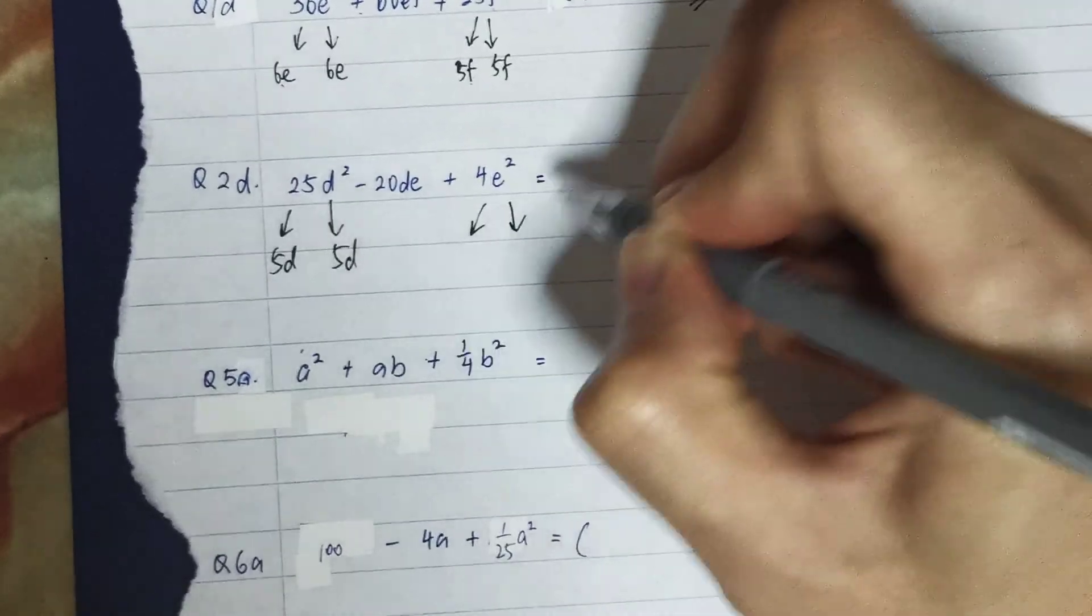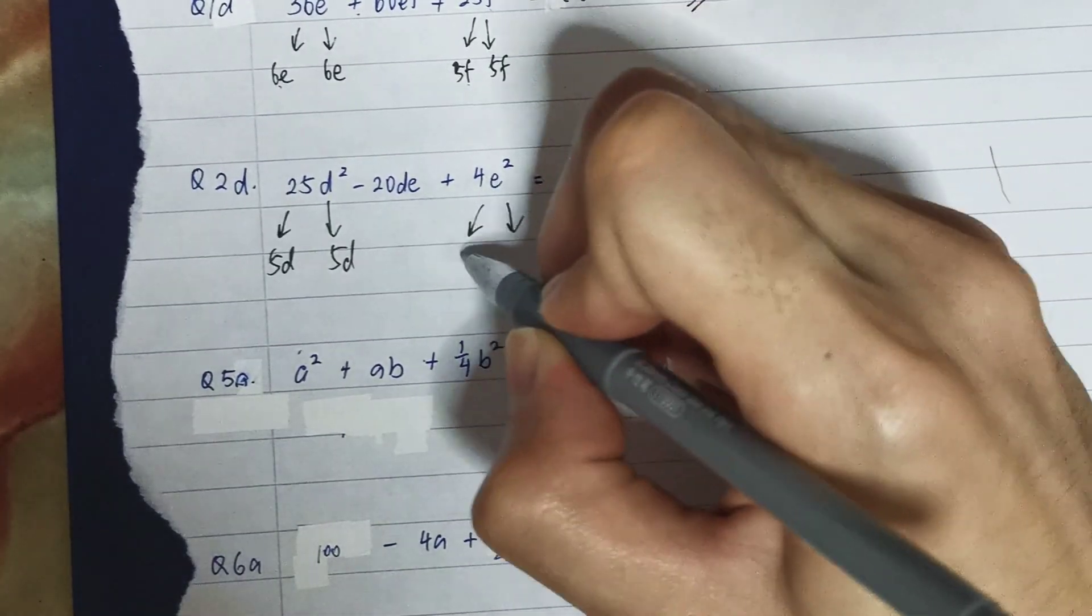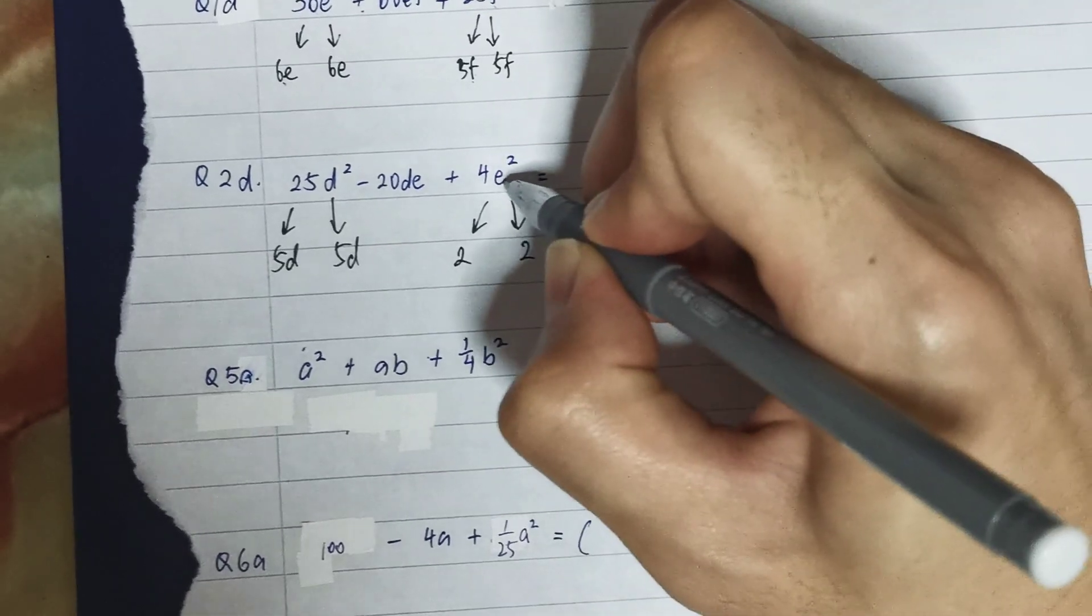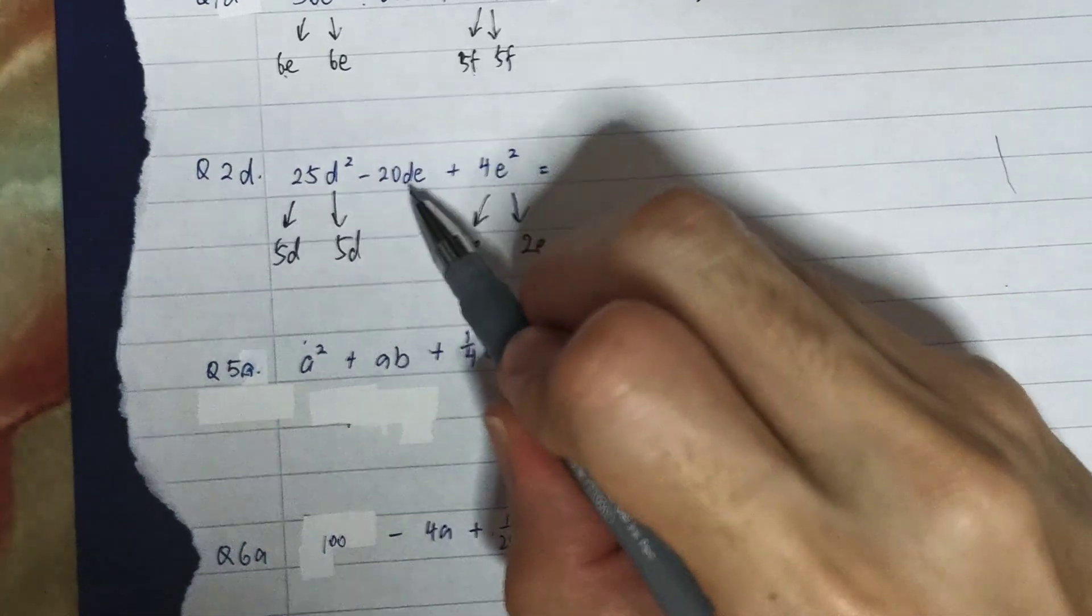Looks promising. 4e² - I know 4 is a square number because it's 2 times 2, and e² is 2e times 2e. The only thing that I left with is to check the middle number, whether is it -2ab or not, because it's minus over here.